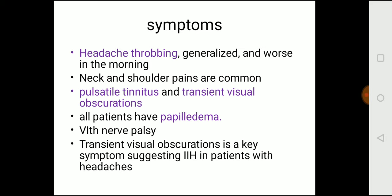Key symptoms: throbbing generalized headache, worse in the morning. Pain on shoulders and neck when the patient flexes the neck. Pulsatile tinnitus and visual obscurations. All patients have papilledema — fundoscopy will show papilledema. Sixth nerve palsy also occurs due to traction. Transient visual obscuration — that is, transient visual blindness — is a key symptom suggesting idiopathic intracranial hypertension in a patient with headaches.